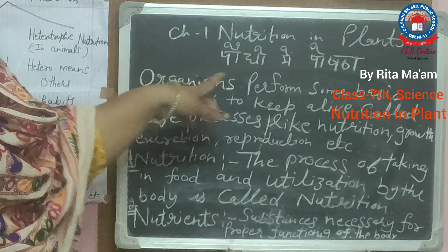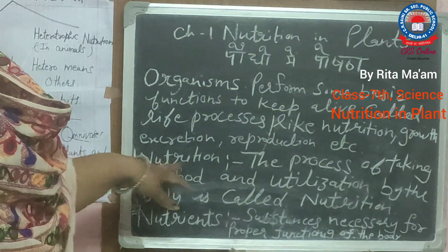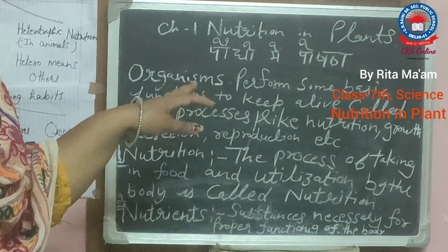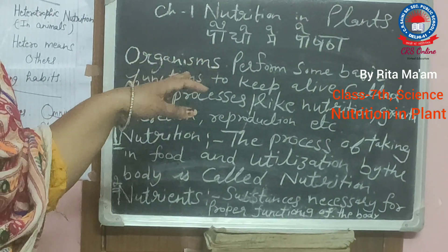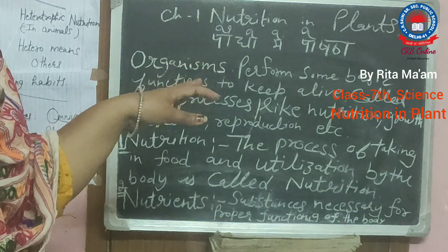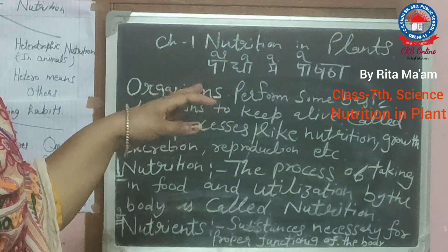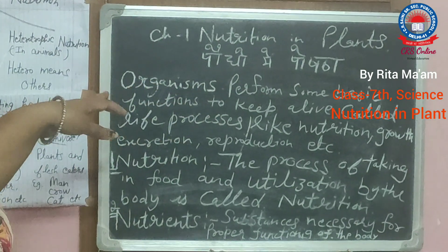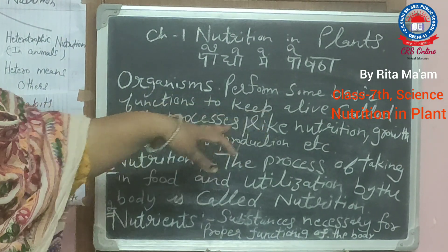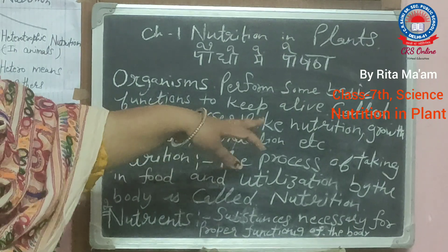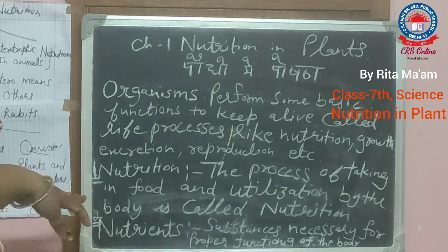Plants need all these nutrients for these processes. Now, what is nutrition? When a living thing eats food, it gets nutrients from its food. These nutrients perform various functions in the body and help them to keep alive, including nutrition, growth, excretion, reproduction, and various other processes.